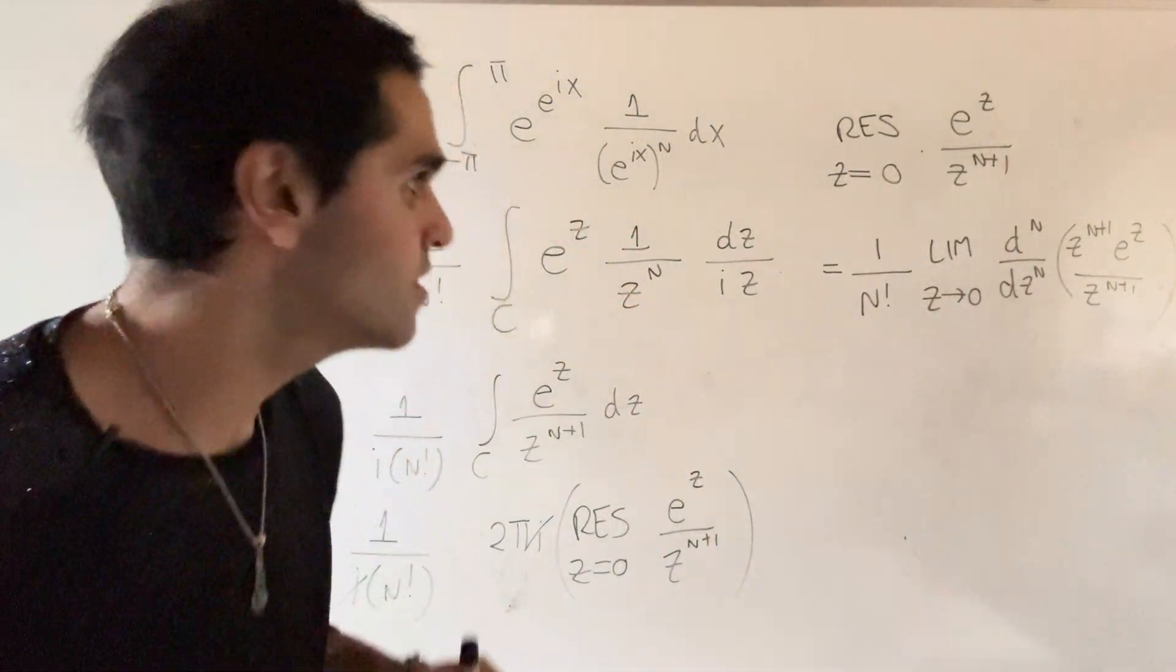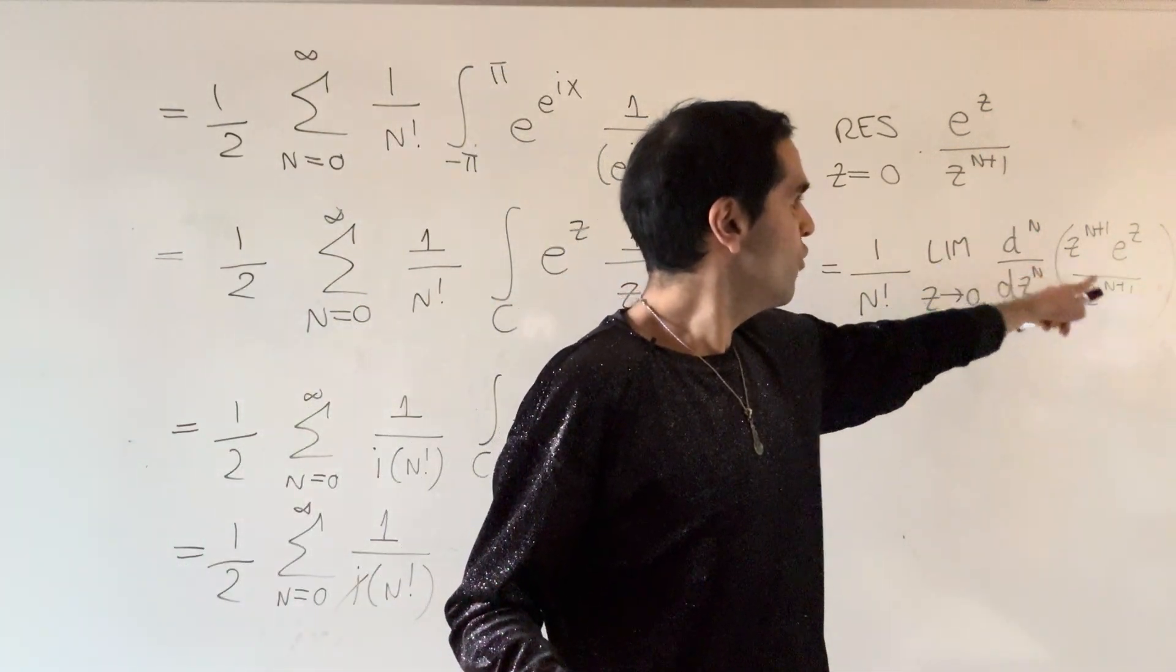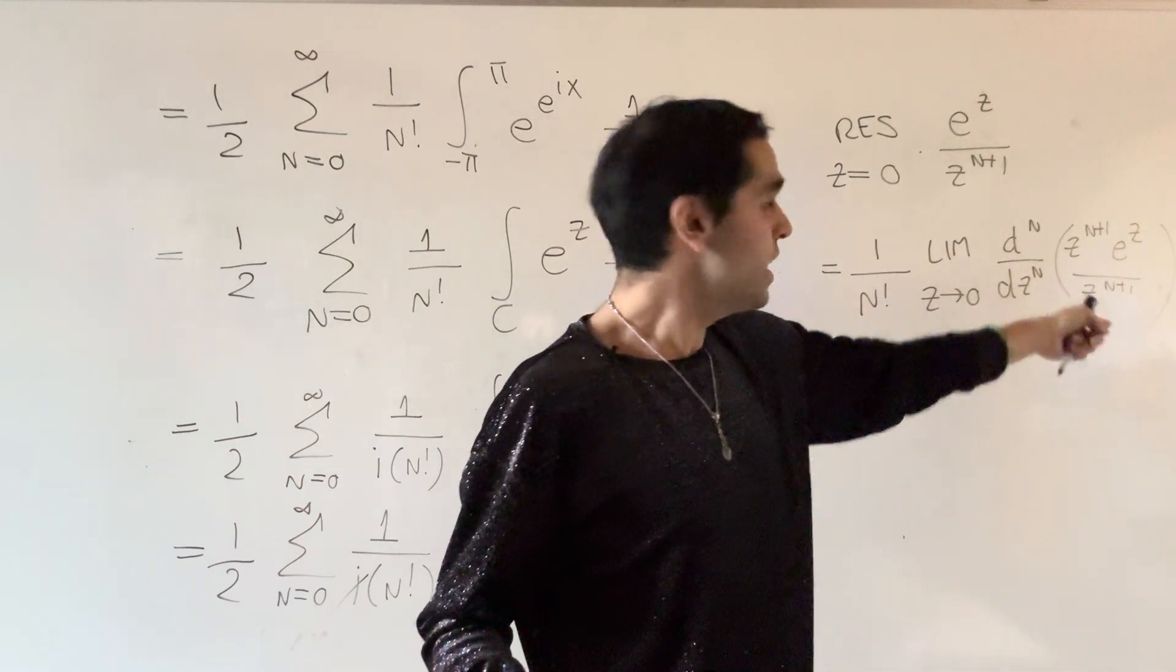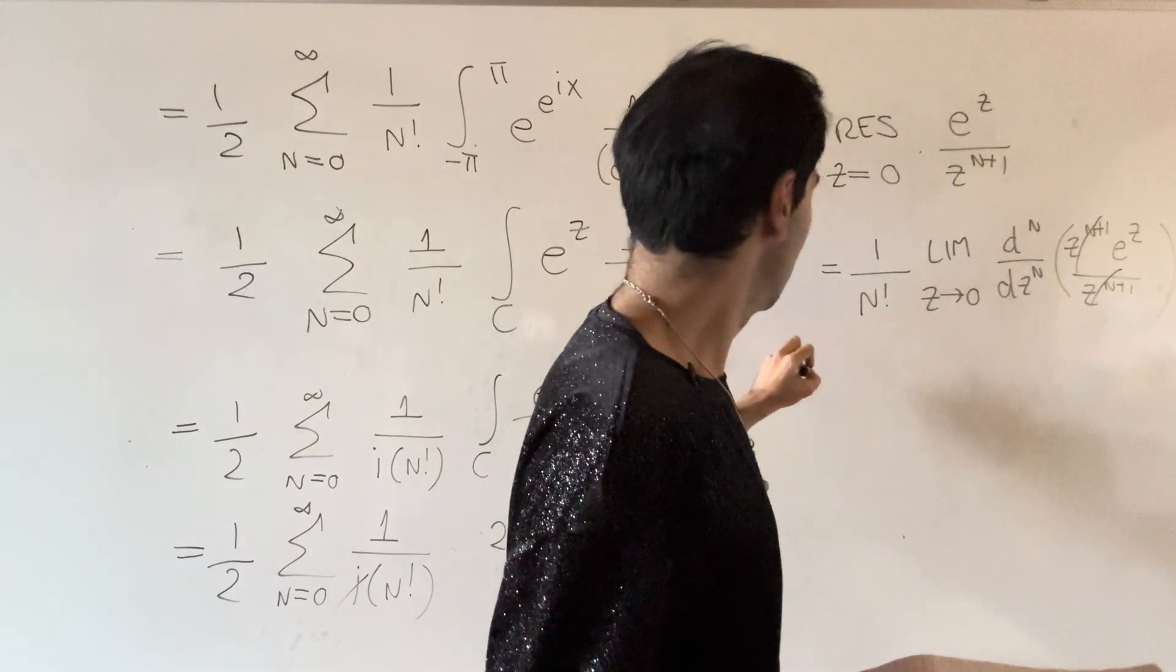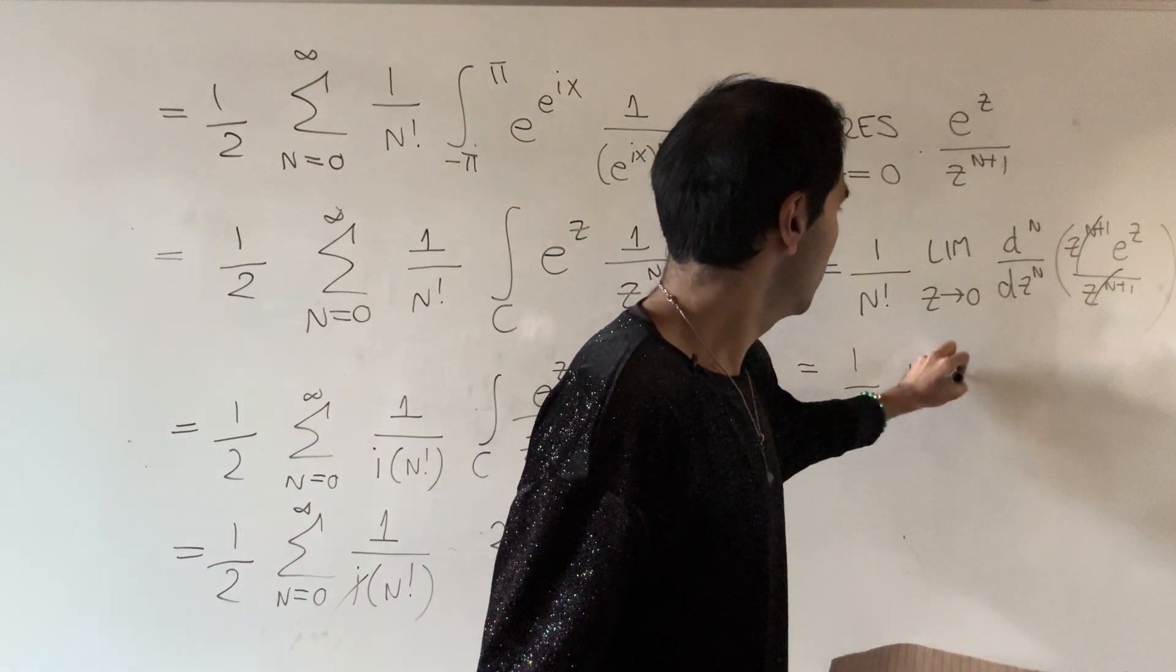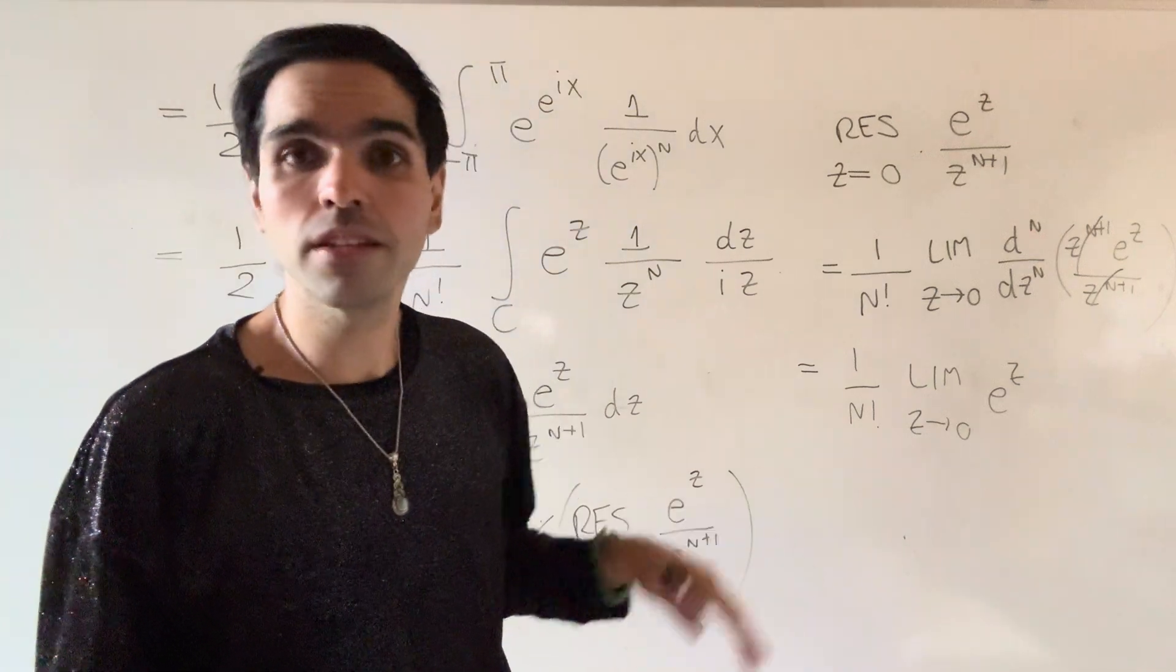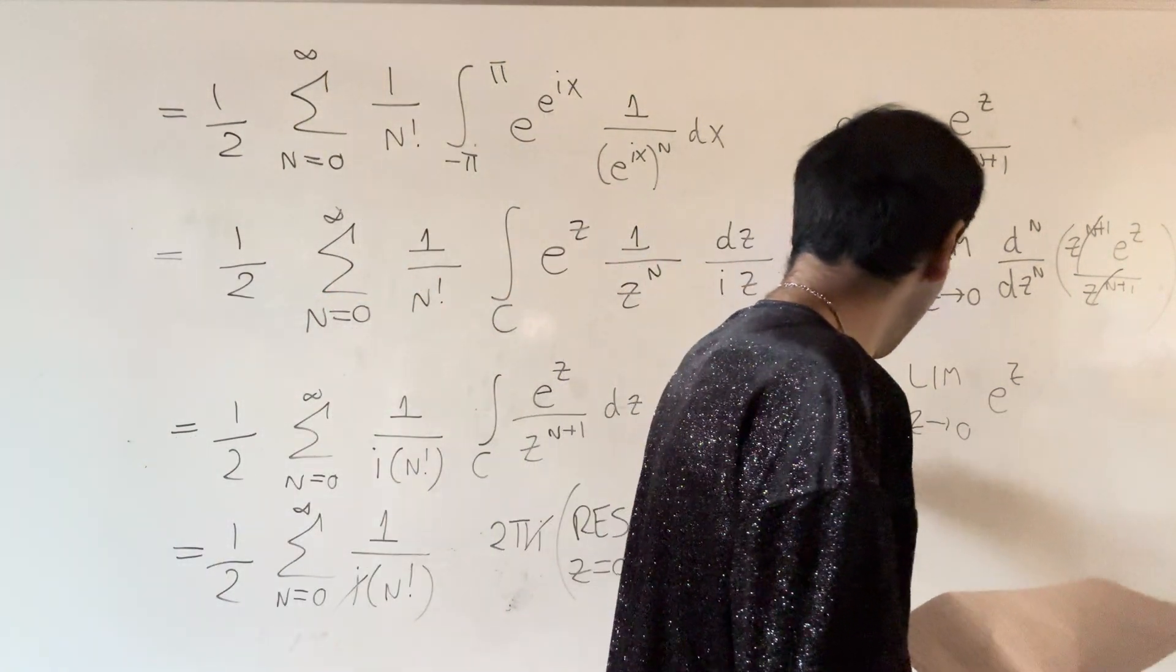So, hopefully, you can see this. This is just using the fact that we have a pole of order n plus one. So, you multiply whatever function you have, by n plus one, which here, conveniently, cancels out. And so, what we're left with, is the one over n factorial, times the limit, as z goes to zero, of e to the z, differentiated n times. And then, in the end, you're left with one over n factorial.